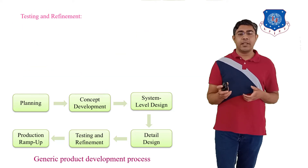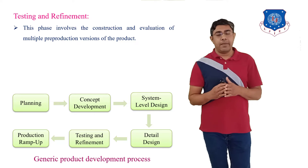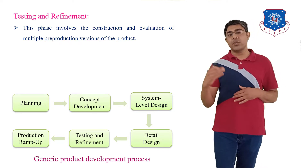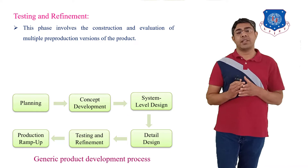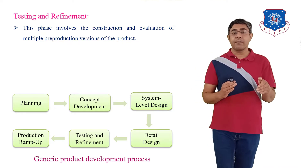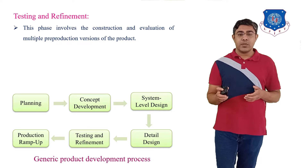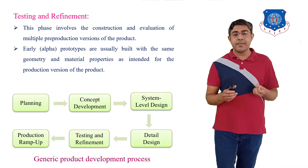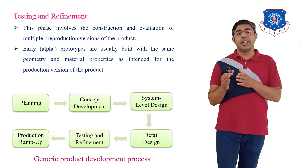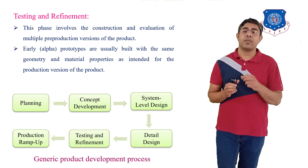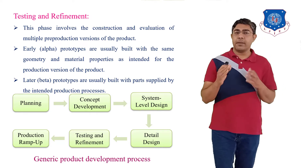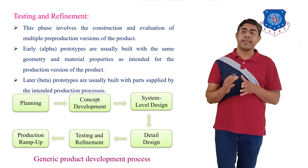Next is Testing and Refinement. This phase involves the construction and evaluation of multiple pre-production versions of the product. Early alpha prototypes are usually built with the same material and same geometry as intended for the production version of the product. Later, beta prototypes are usually built with parts supplied by the intended production process.